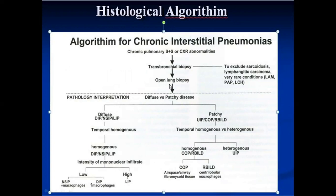Whenever we have a transbronchial biopsy or open lung biopsy and it comes under the microscope, the first thing we have to notice about the lesion is whether it is diffuse versus patchy. If we have a diffuse lesion, then our differential includes DIP, SIP, and LIP. The second thing is whether the lesion is all in one stage or in different stages. If the lesion is in one stage, we can call it temporal homogeneity.